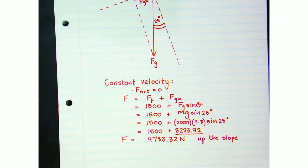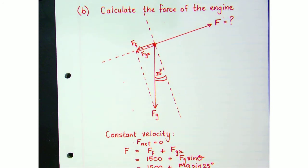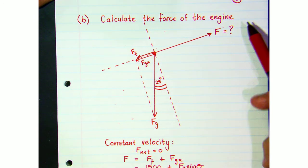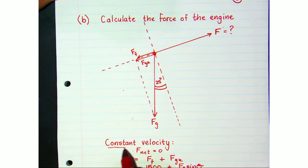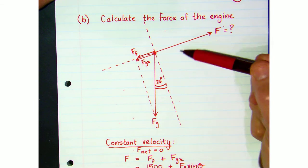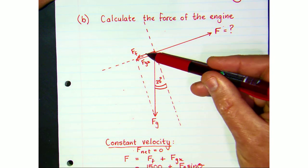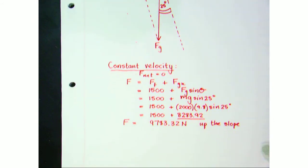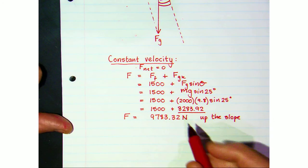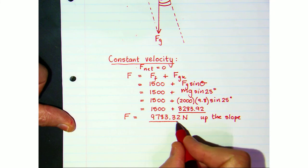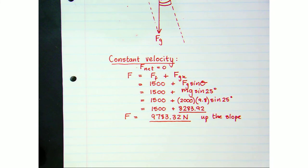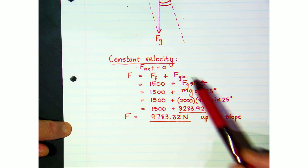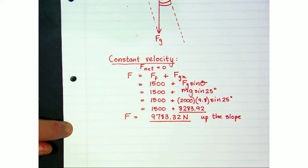We've answered part B. We set out to find the forward force of the engine, and knowing the car traveled at constant velocity, the forces needed to be balanced — the downward forces balanced by the upward force. We arrived at 9,783.32 newtons. Don't forget to include the horizontal component of the weight down the slope.